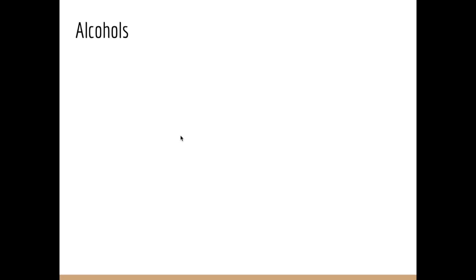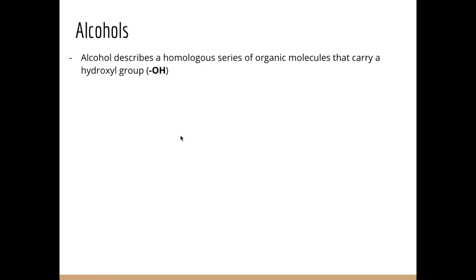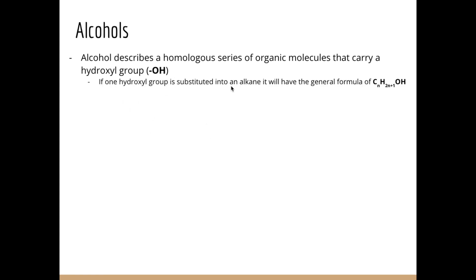We're going to continue our journey into different homologous series by looking at the alcohols. This describes a homologous series of organic molecules that carry a hydroxyl group — a covalently bonded oxygen and hydrogen on our carbon chain. If one hydroxyl group is substituted into an alkane, it will have the general formula CnH2n+1OH. If we have an alkane CnH2n+2 and substitute one hydrogen for a hydroxyl, we get a mono-substituted alcohol.